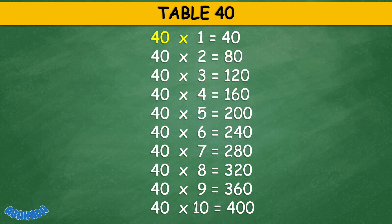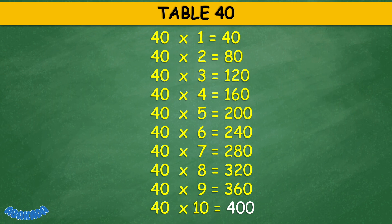Table 40: 40 times 1 equals 40, 40 times 2 equals 80, 40 times 3 equals 120, 40 times 4 equals 160, 40 times 5 equals 200, 40 times 7 equals 280, 40 times 8 equals 320, 40 times 9 equals 360, 40 times 10 equals 400.